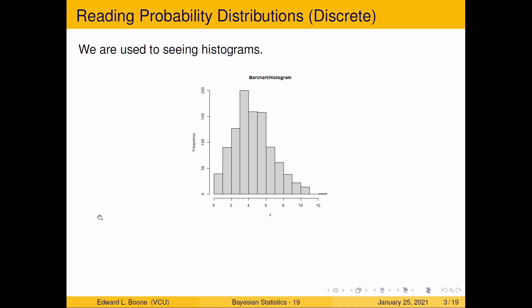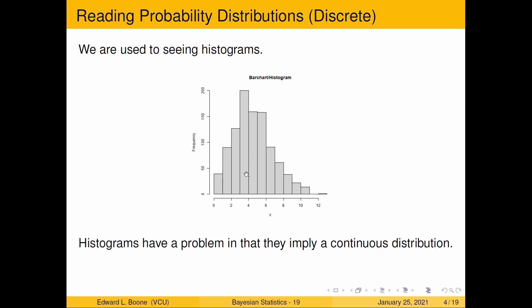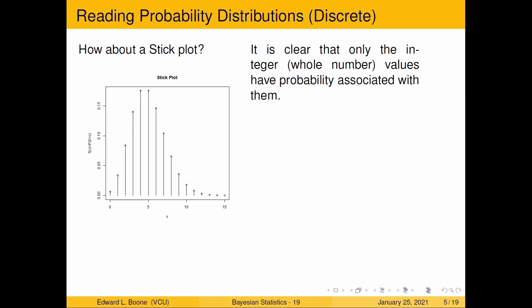So we want to be able to look at probability distributions, and most people are used to seeing histograms. You would collect some data, you would plot it, and you'd say, here is my histogram. But this isn't the best approach. Histograms have the problem that they imply a continuous distribution — everything's filled in. But if I'm a discrete distribution, things aren't filled in. So what I might want is a stick plot like this, which shows a stick going up at each of the values that actually have some probability on it.